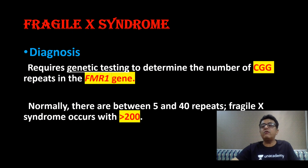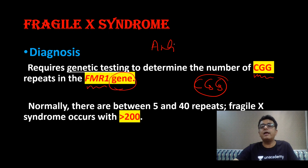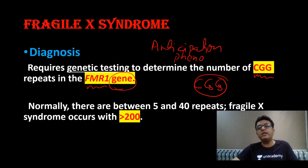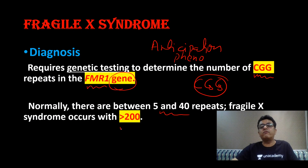For diagnosis of Fragile X, we need to demonstrate the CGG sequence — triple codon repeat at the FMR1 gene. Whenever there is a triple codon repeat, these diseases show the anticipation phenomenon: severity of disease increases with successive generations — less severe in grandfather, more severe in father, most severe in son. Normally there are 5 to 40 repeats, but in Fragile X syndrome there are more than 200 repeats.